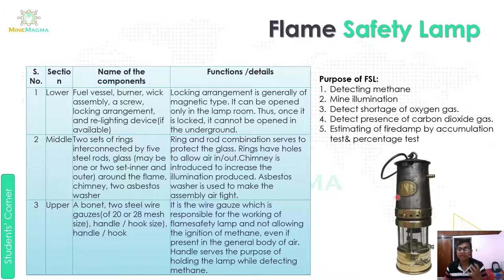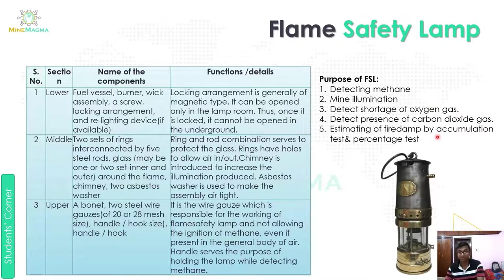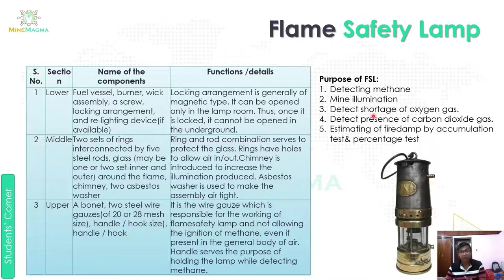Next is the flame safety lamp (FSL). There are five purposes of the flame safety lamp: first, detecting methane; second, mine illumination; third, detecting shortage of oxygen gas; fourth, detecting carbon dioxide gas presence; and fifth, estimating fire damp by accumulation test or percentage test. Fire damp is a methane and oxygen mixture which is a very inflammable gas.